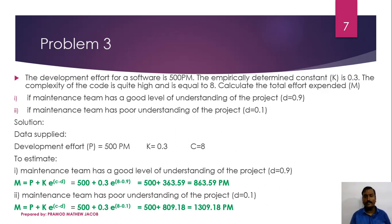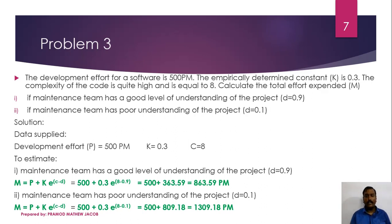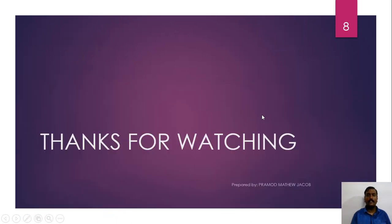For the second case, the maintenance team has poor understanding of the project, so D equals 0.1. Substituting: M equals 500 plus 0.3 into e raised to (8 minus 0.1), which equals 500 plus 0.3 into e raised to 7.9, which equals 500 plus 809.19, giving a total of 1309.19 person months. Here we can notice that the effort and the maintenance cost increases drastically if the maintenance team has poor understanding about the project being maintained.